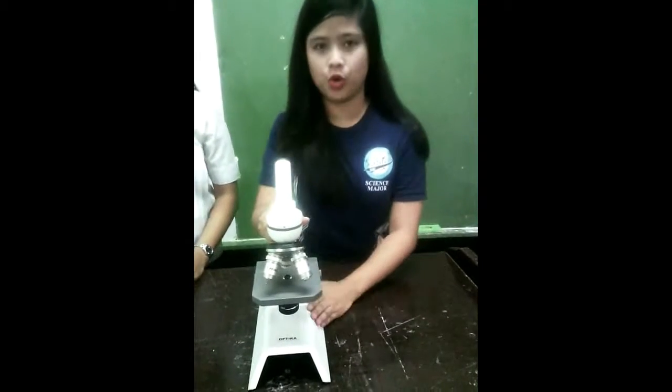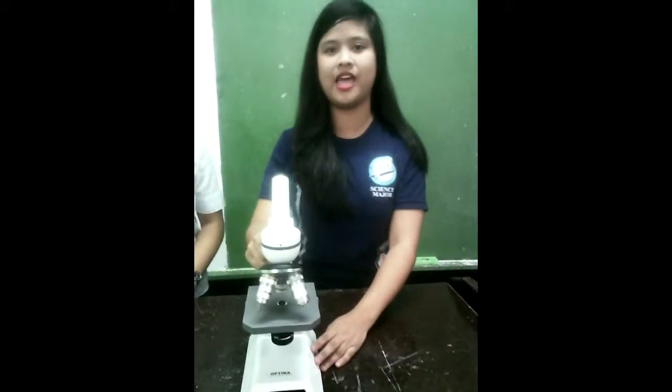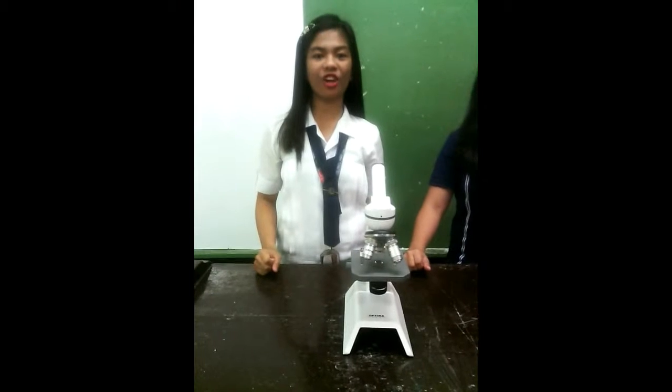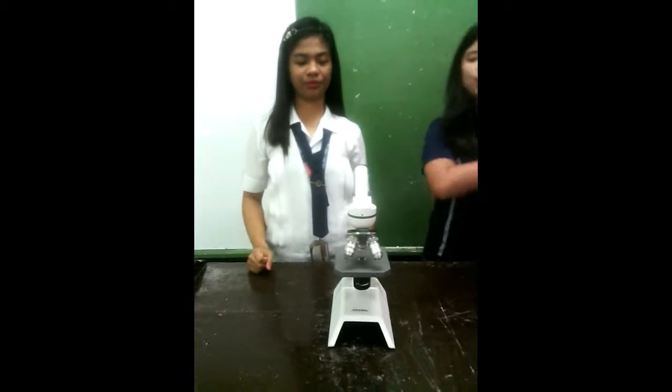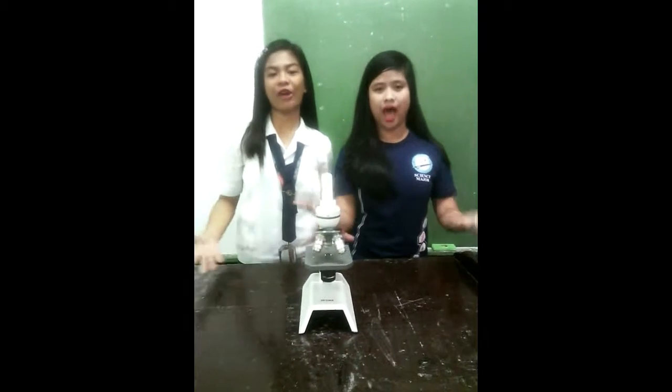The early microscopes used by Anton van Leeuwenhoek were described as simple since they only had one lens. Also, in 1595, the Johnson Brothers invented the compound microscope. With that, let us know further about compound microscope and how it works.